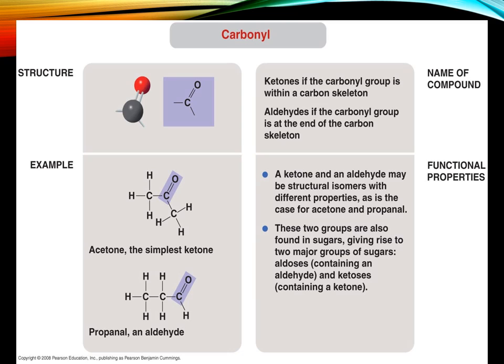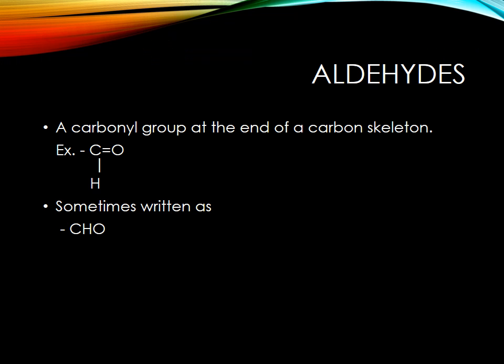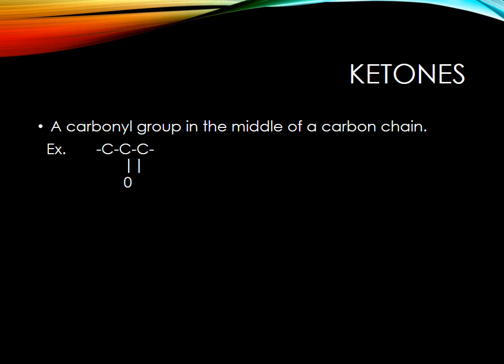The next group is a carbonyl group. There are two different breakdowns of carbonyls. There's ketones, where that double bond will occur within a carbon skeleton, and aldehyde, where it's at the end of the skeleton. So you've got a ketone where it's in the middle of the carbons, and an aldehyde where it's at the end of the carbons — you will need to know the difference. These are found in sugars, and they give your aldehydes and ketones, which allow you to process sugars quickly.